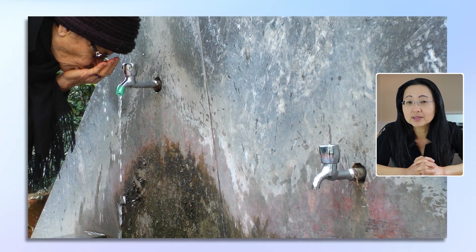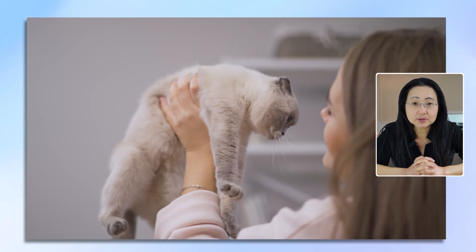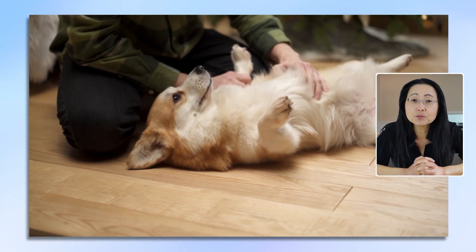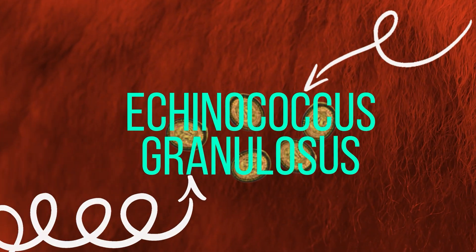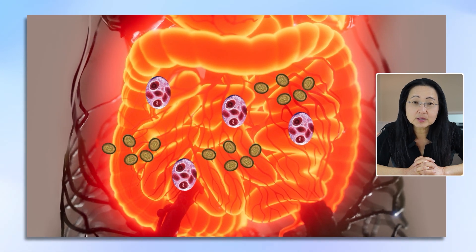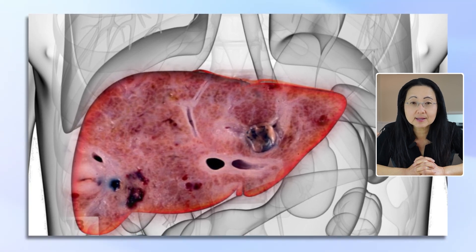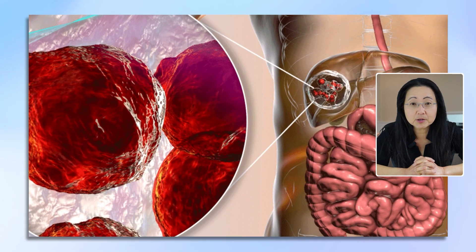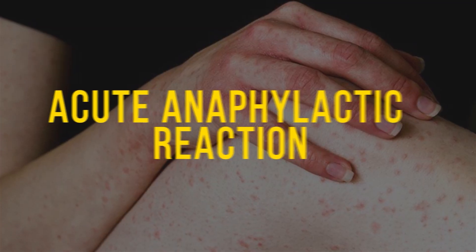Oftentimes people don't realize that common things considered relatively safe may expose them to deadly parasites. Petting zoos or even touching your own pets can be a source. The fur of canines can be contaminated with the eggs of a tapeworm called Echinococcus granulosis. If you don't wash your hands and accidentally ingest the eggs, they will hatch in your small intestine and most commonly invade your liver, where they can grow into giant cysts. Inside these cysts are smaller infectious parasites, and if they rupture, the person can have an acute anaphylactic reaction, which is a deadly allergic reaction.